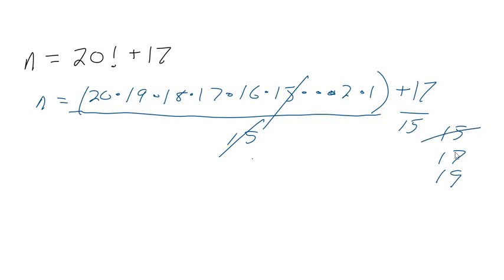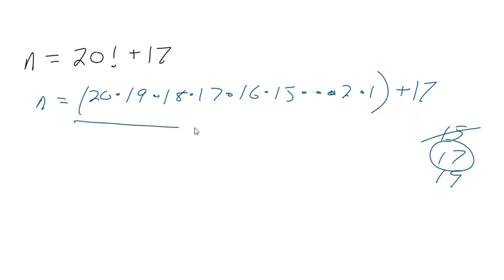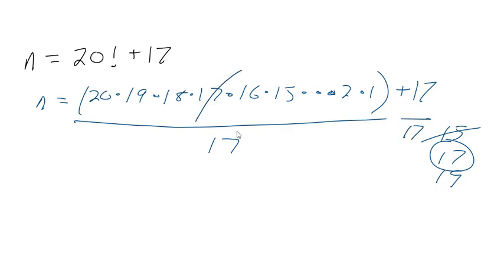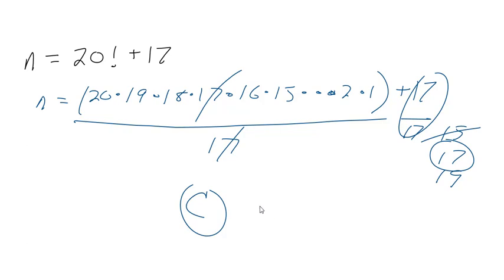With that, you can see what the answer is going to be — it's going to be 17. If we were to divide all of this by 17, we get 20 factorial over 17 plus 17 over 17. The 17s in 20 factorial cancel, and then at the very end we would be adding 1. The only number that can be divided into 20 factorial plus 17 is 17.